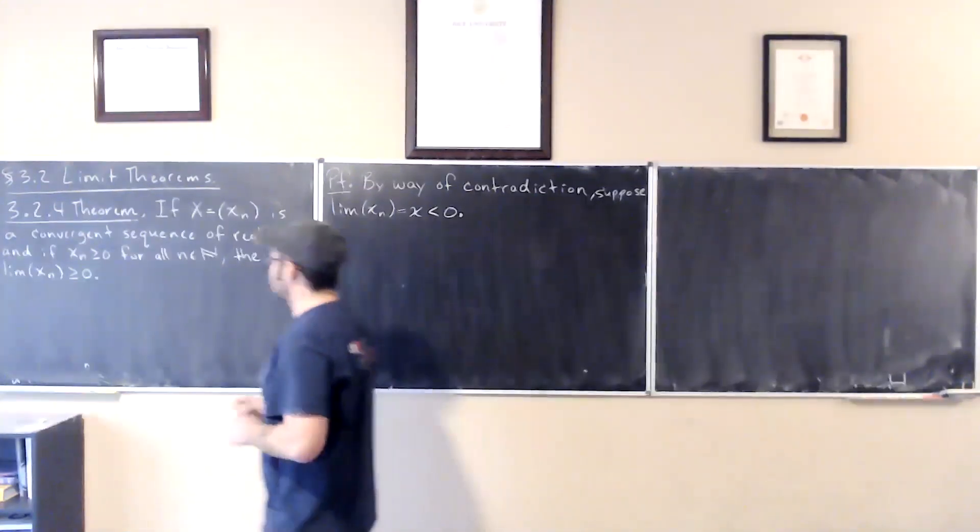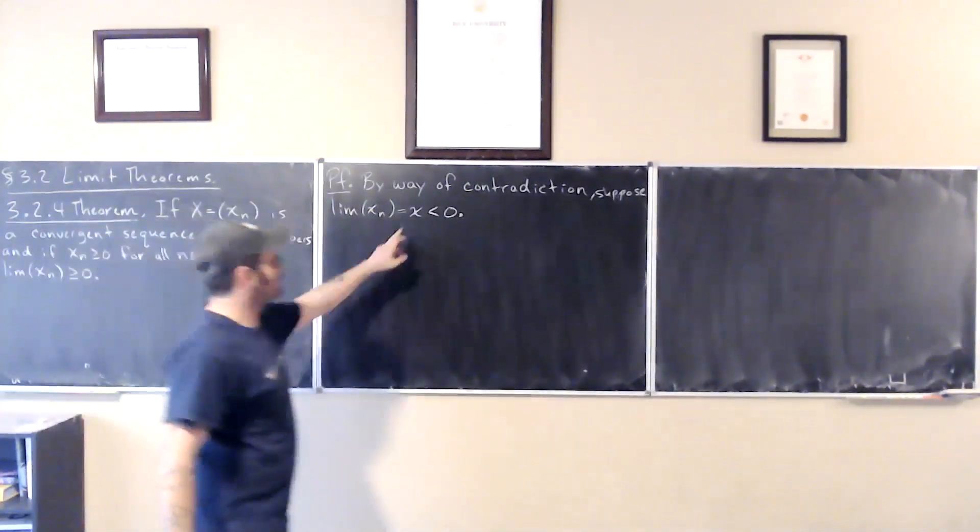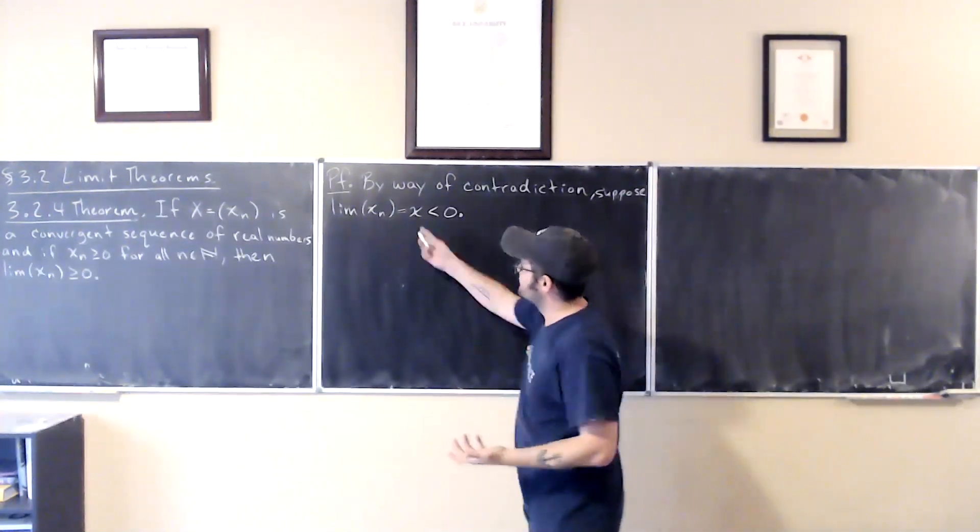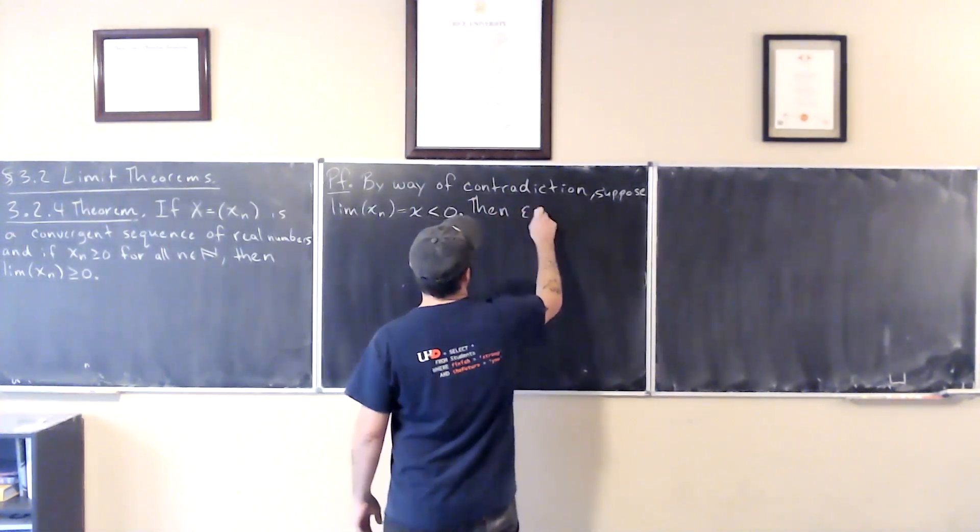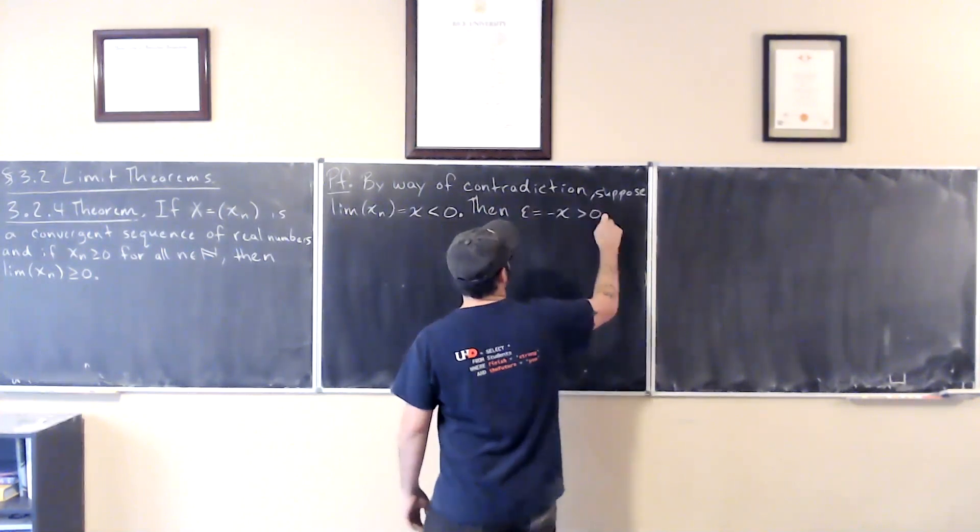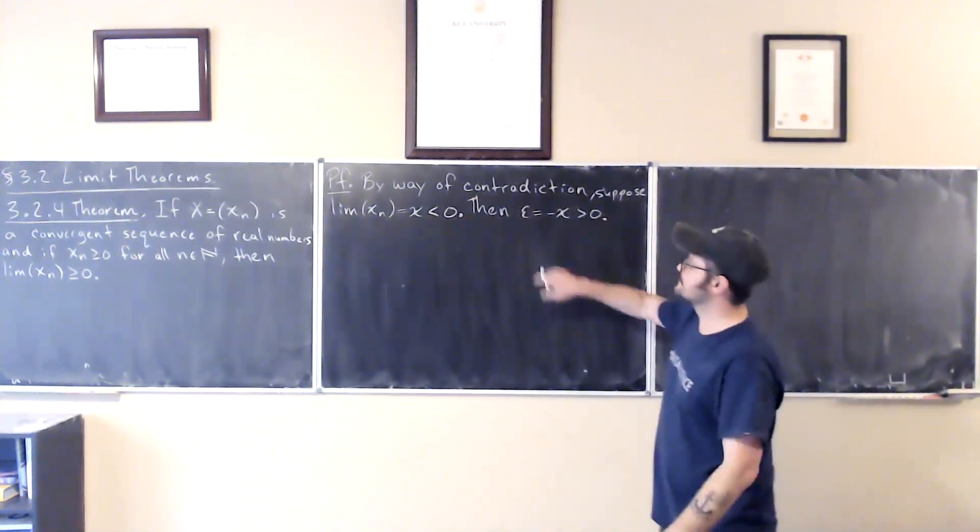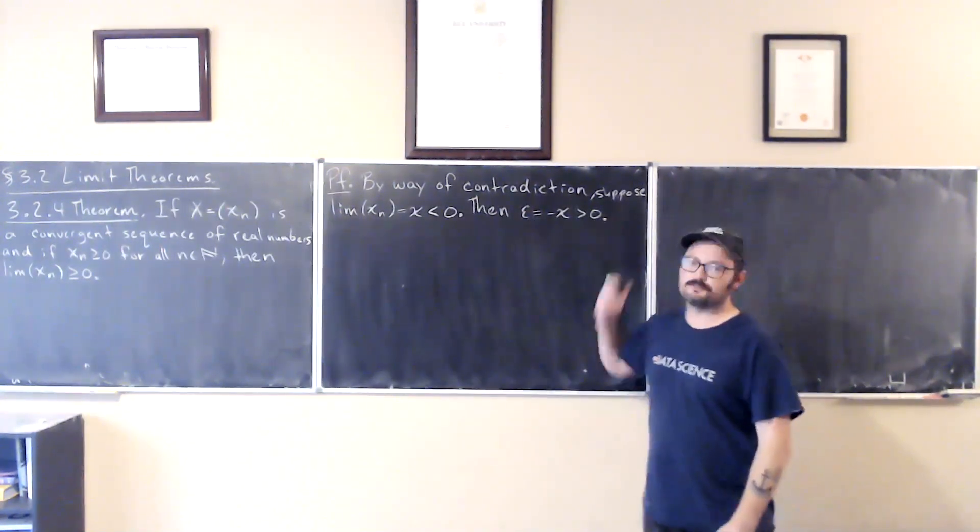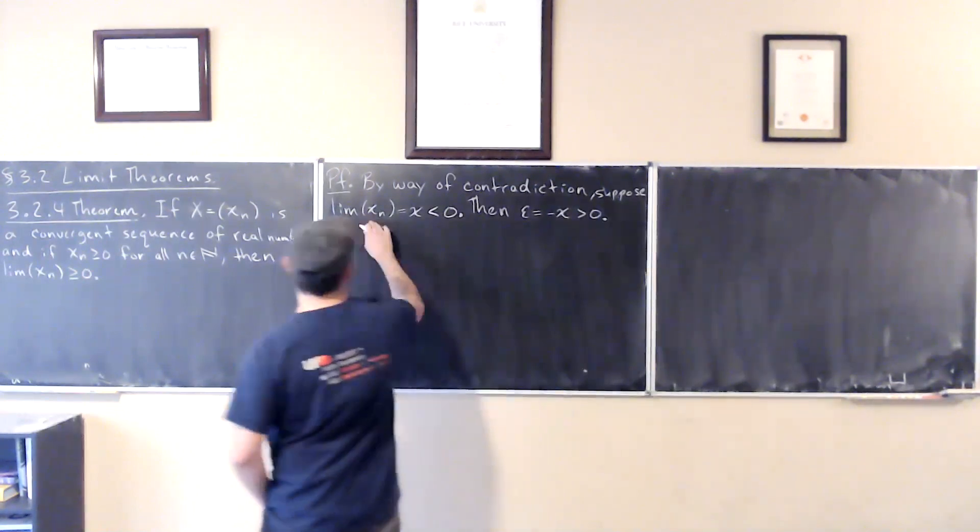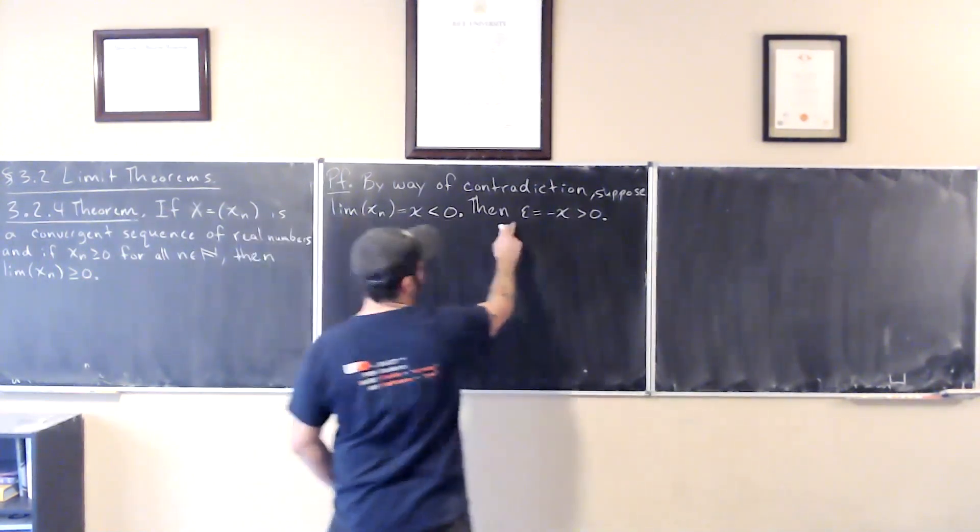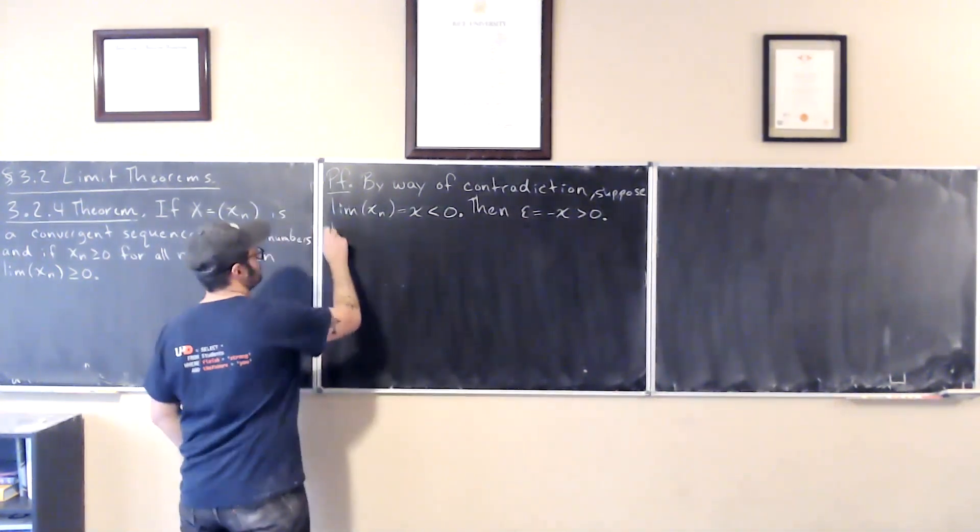So then, if that limit, which we know is convergent, we're assuming the sequence is convergent. So if that limit is less than zero, then I know something about what I can do with x. I can say that epsilon equals negative x is greater than zero, right? If x is negative and I multiply it by negative, I get a positive, and I can choose epsilon to be that number.